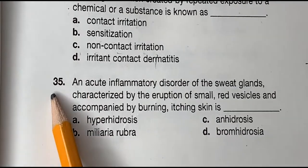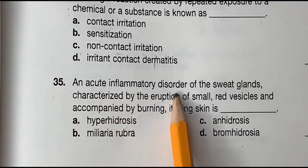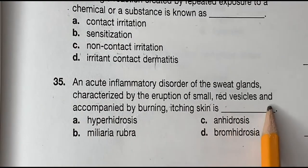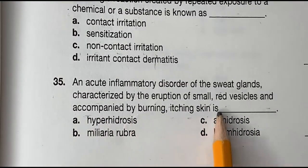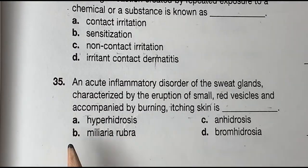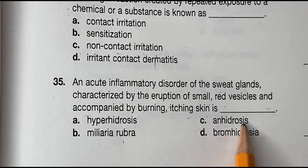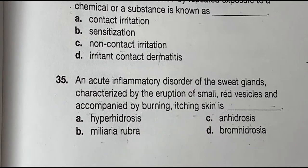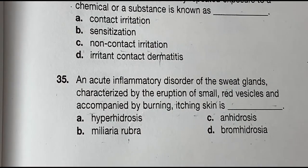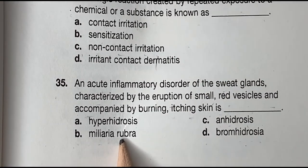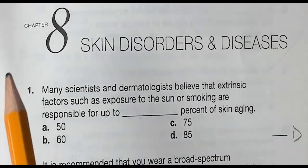Question 35: An acute inflammatory disease of the sweat glands characterized by the eruption of small red vessels and accompanied by burning, itching skin is blank. Is it A, hyperhidrosis. B, miliaria rubra. C, anhydrosis. Or D, hyperhidrosis. And the correct answer is B, miliaria rubra. That is the end of Chapter Eight.